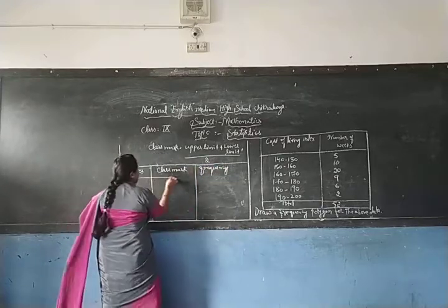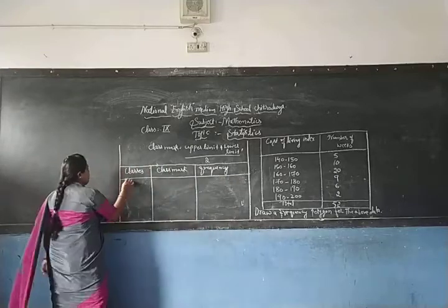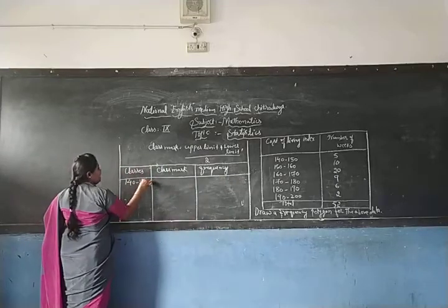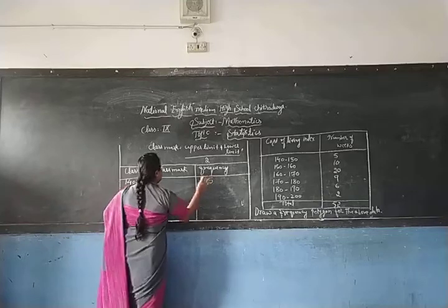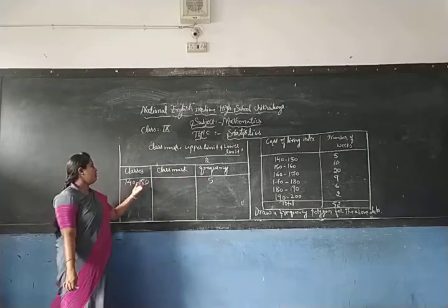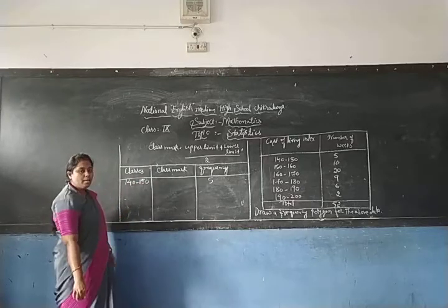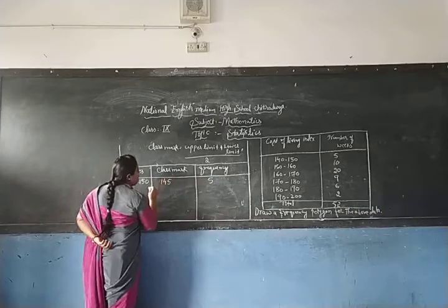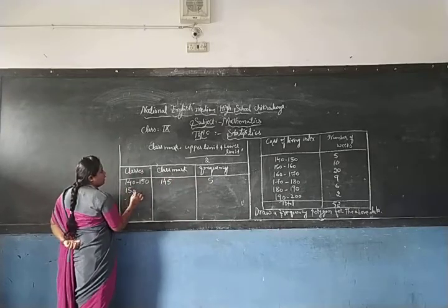Now, the first class is 140 to 150. To find the class mark, we add 140 plus 150 which equals 290, and 290 divided by 2 equals 145. Like that, only we have to proceed in the same manner for all class intervals.